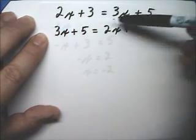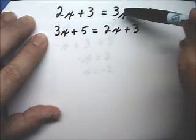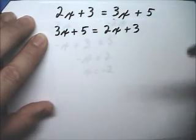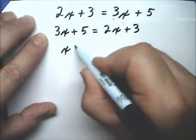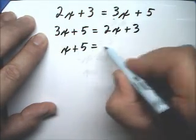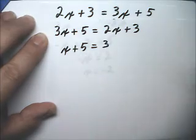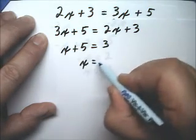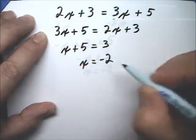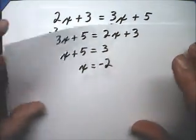See, I've just switched them. I've put this one on this side. If this equals this, then this equals this, so I just switched them. Now when we minus 2x to both sides, we'll end up with x + 5 = 3. And now when we minus 5 to both sides, we'll have x = -2.